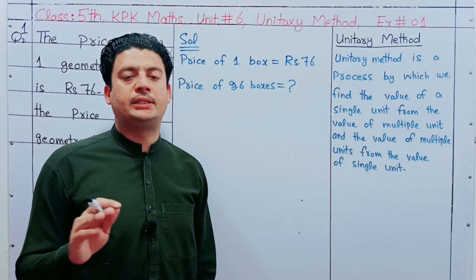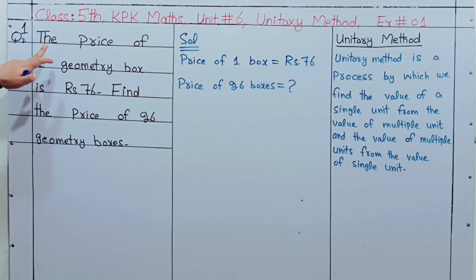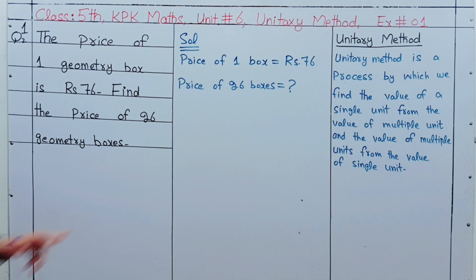The price of one geometry box is 76 rupees. Find the price of 26 geometry boxes. Here we need to find the value of multiple units from the value of a single unit.